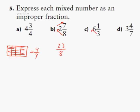3 times 6 is 18, plus 1 is 19, so 19 thirds. And finally, 7 times 3 is 21, plus 4 is 25 — so 25 sevenths.